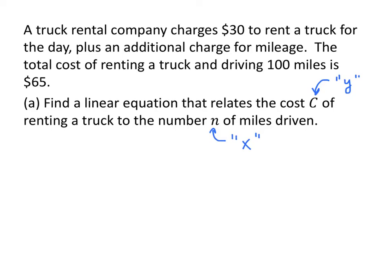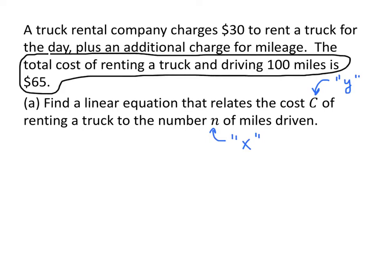Now let's interpret the information given in our problem as points on our line. It's easier to interpret the second sentence first: the total cost of renting a truck and driving 100 miles is $65, so when X is 100, Y is 65. The first sentence says the company charges $30 for the day — that tells us how much we pay when we drive zero miles. So our other point on the line is (0, 30).